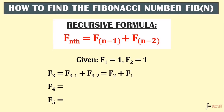We need the value of F2 and F1. F2 is given as 1, and F1 is also 1. So when we add them, 1 + 1, we have 2. Therefore, the 3rd term is equal to 2.